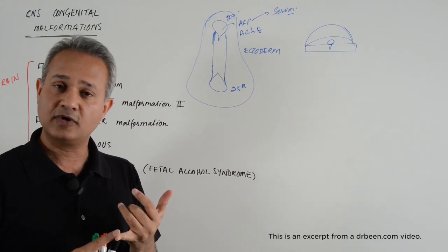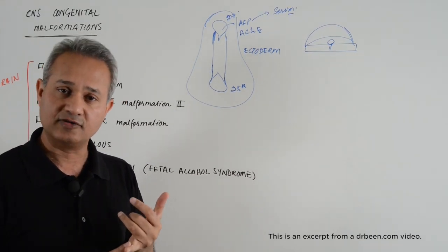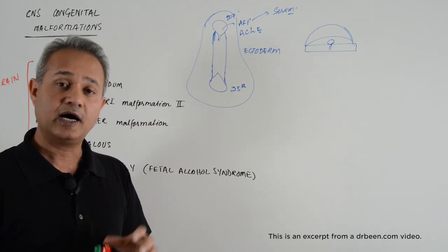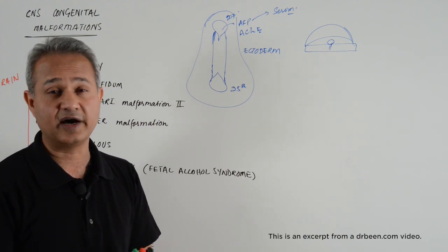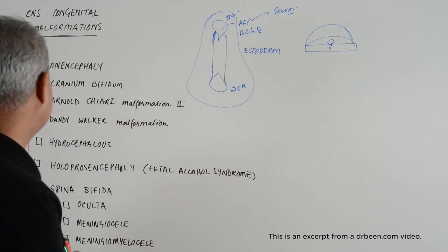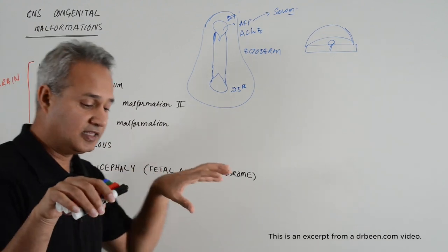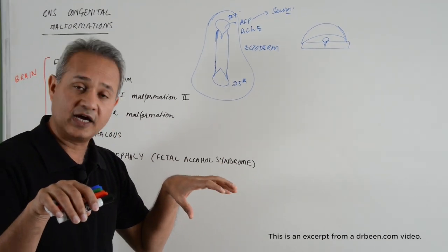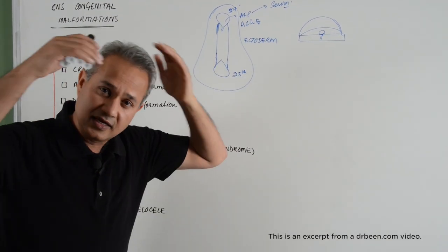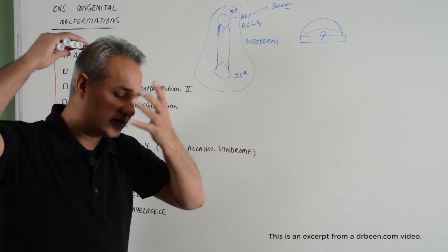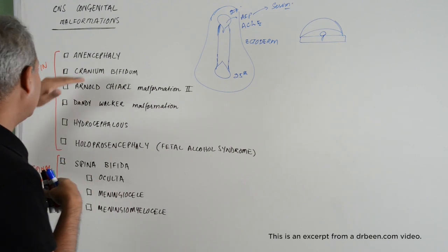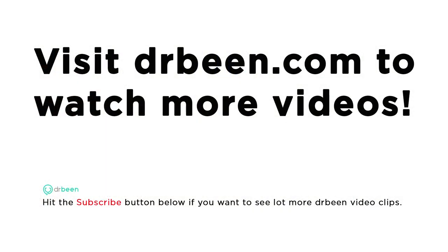It occurs in 1 in 1,000 births in US. However, in certain regions, for example certain regions in China, 1 in 100, which is a very high number. With anencephaly, the embryo, the born child, would have a frog-like appearance in the facial area, and the brain area is really flattened and there is no brain in there. That is anencephaly.